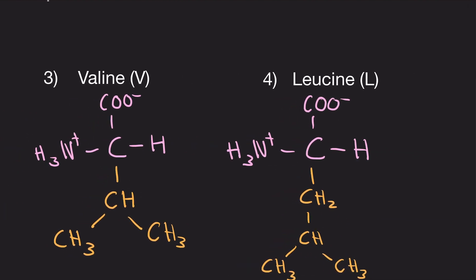Now we have leucine. Leucine is exactly like valine, so we take the structure, move it over, and we just add a CH2 into it. We're essentially just building off the chain. That's leucine.